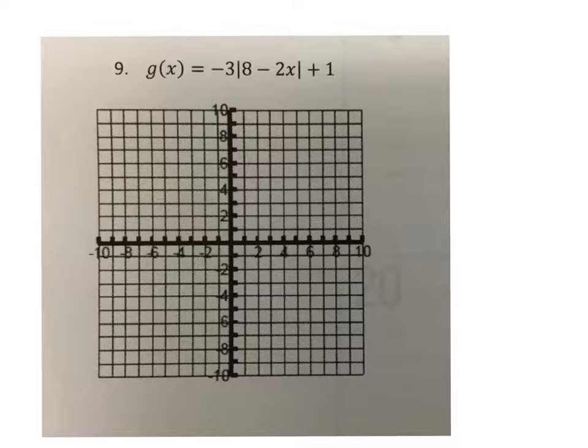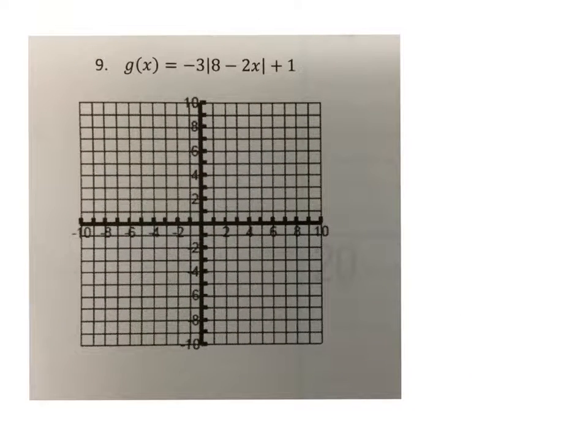To graph it first, we need to figure out where the x-coordinate of the vertex is. To find the x-coordinate of the vertex, we take the thing inside of the absolute value and set it equal to zero.